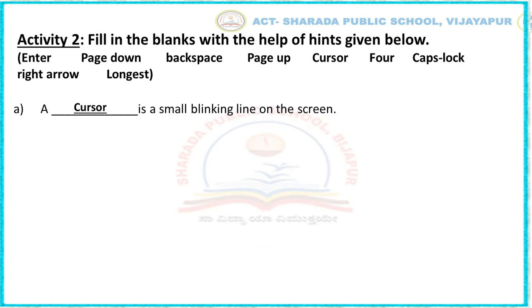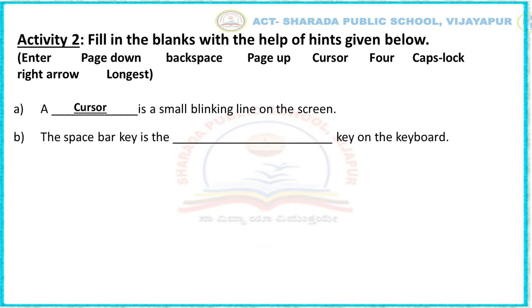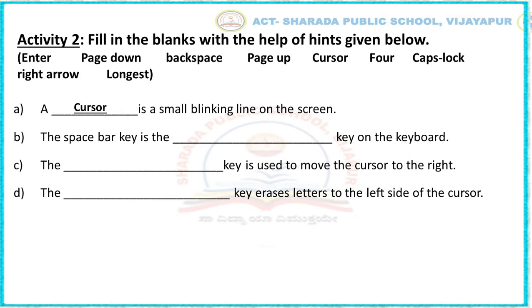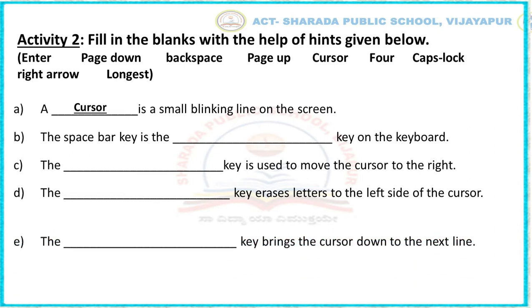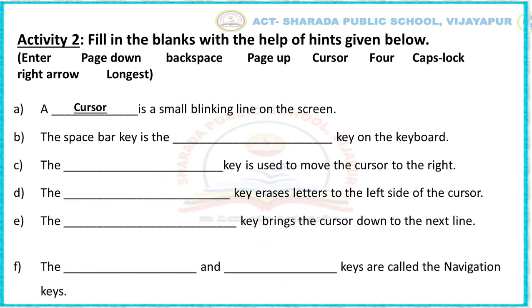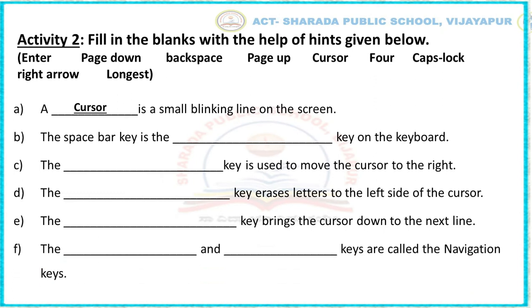Let me read out the remaining questions for you. The spacebar key is the blank key on the keyboard. The blank key is used to move the cursor to the right. The blank key erases letters to the left side of the cursor. The blank key brings the cursor down to the next line. The blank and blank keys are called NAVIGATION KEYS. Hope you understood the questions — select the answer from the options given and choose the correct answer.